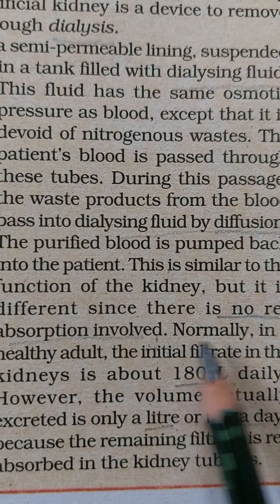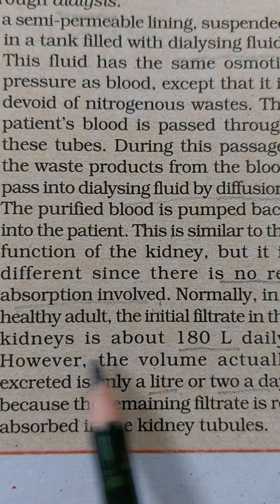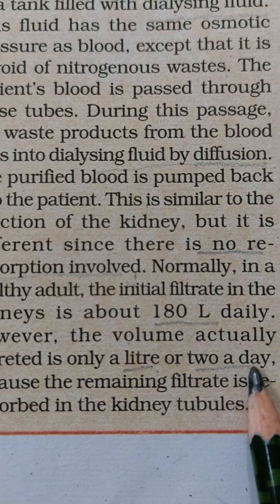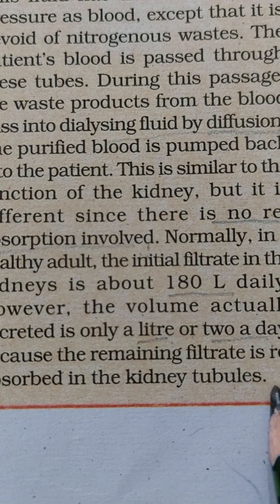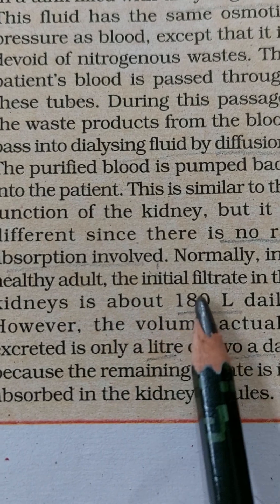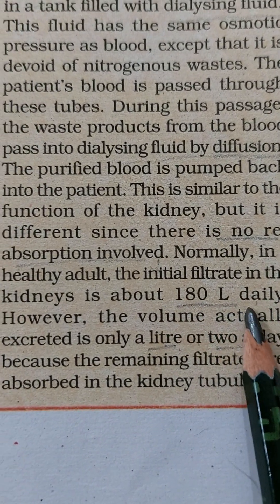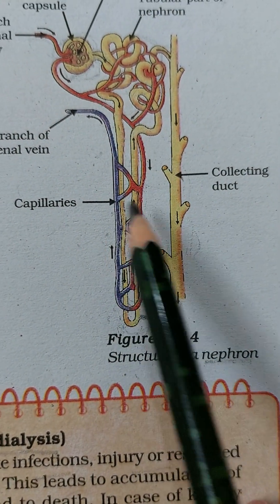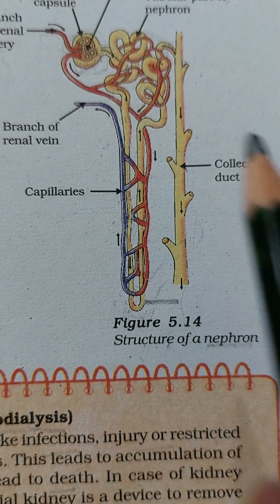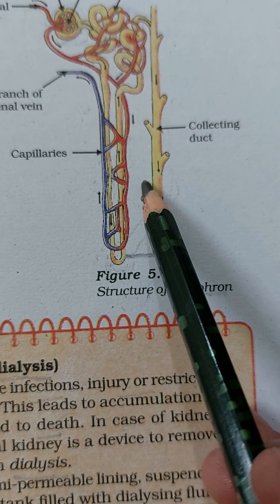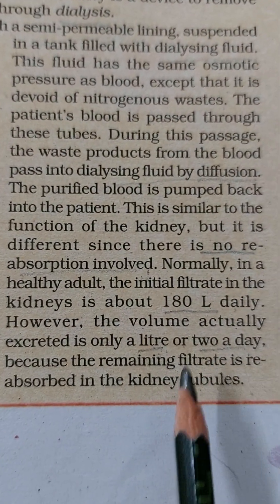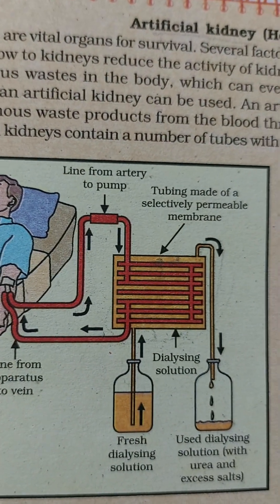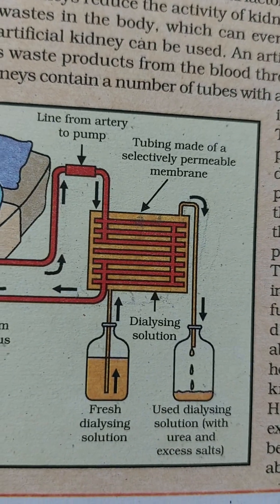The volume actually excreted is only one or two liters a day because the remaining filtrate is reabsorbed in the kidney tubules. In a healthy person, the initial filtrate is 180 liters daily, but after reabsorption in the loop of Henle, it is reduced to only one or two liters of urine. In the dialysis machine, nitrogenous waste is removed from the blood without this reabsorption step.